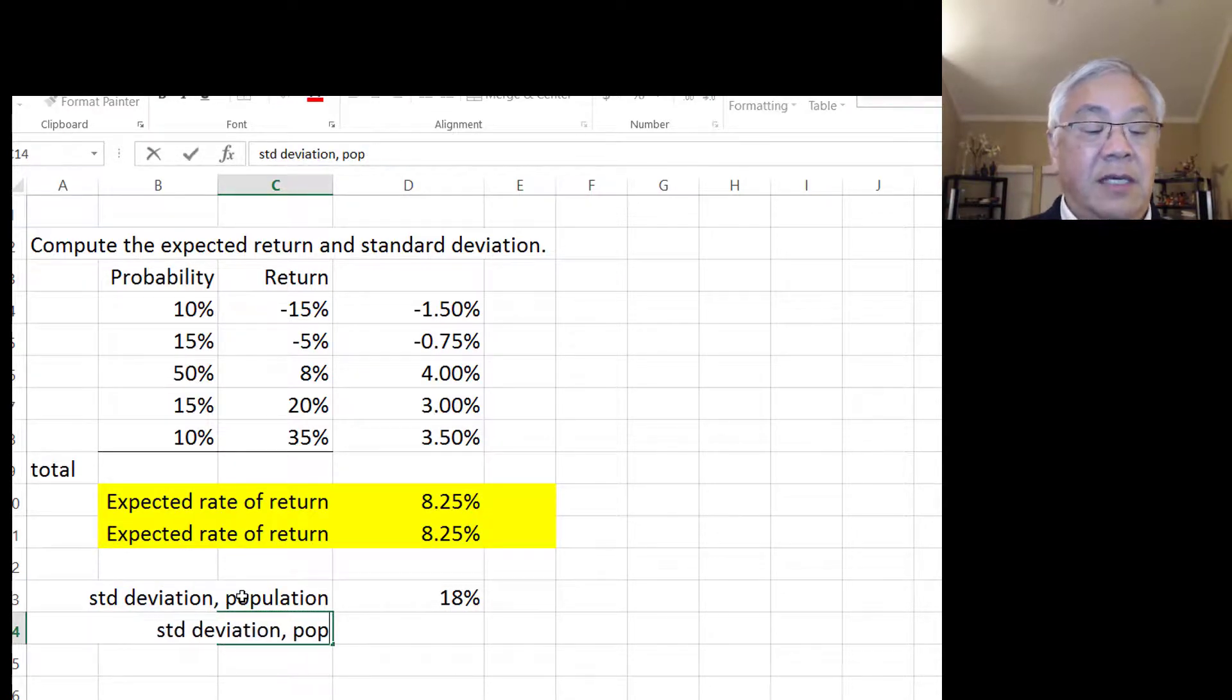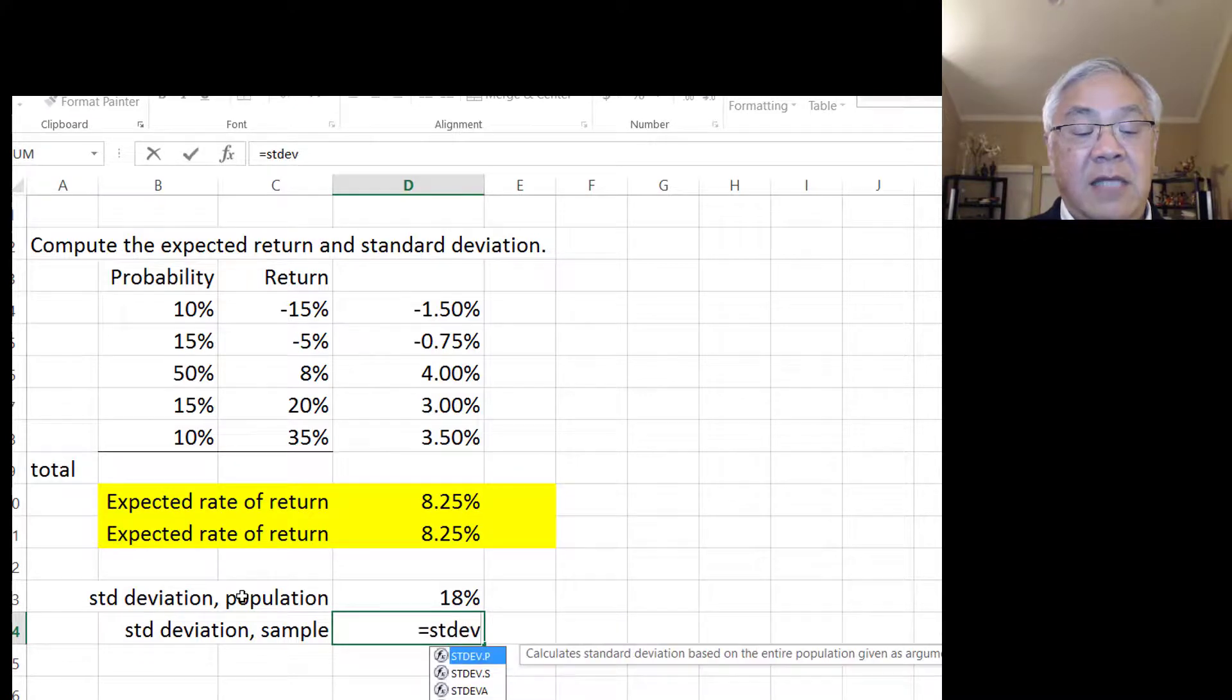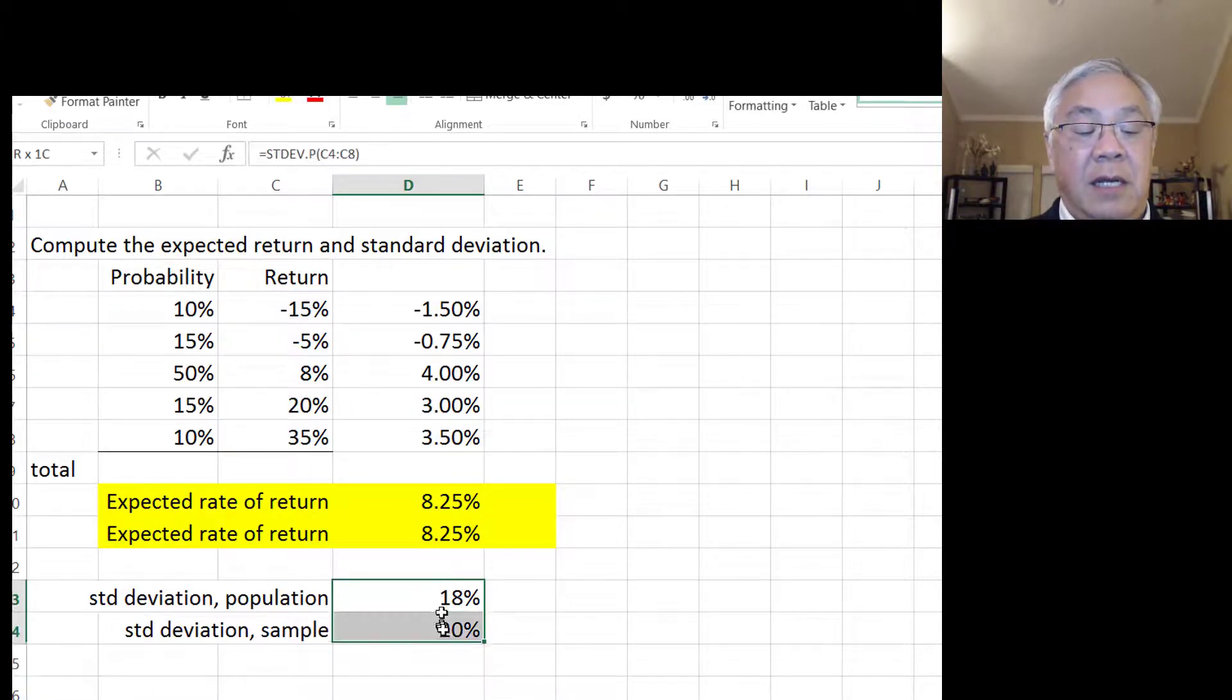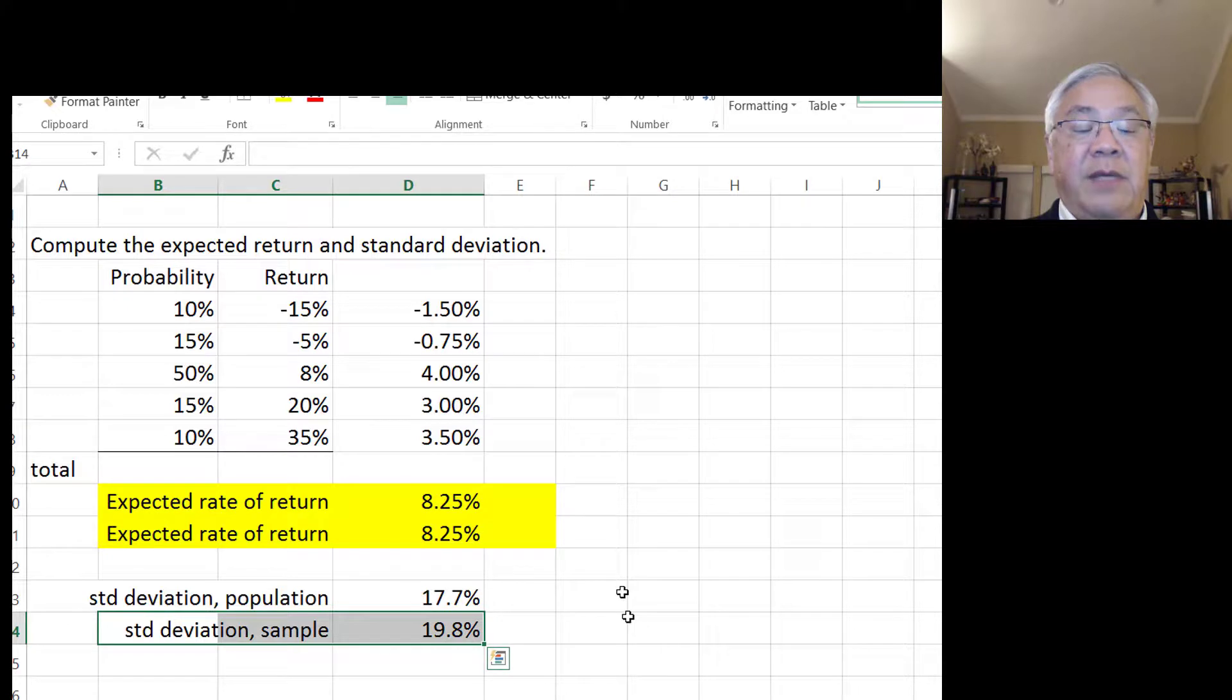And here I'm going to modify it to be of a sample. And that would equal STDEV.S for sample, open parens, same thing. What's the array of returns? Enter. So it is, and I'll increase the number of digits. And so if we had the entire population, it was 17.7%. And if we have a sample, the standard deviation would be 19.8%.